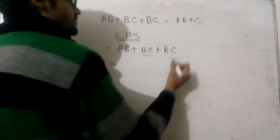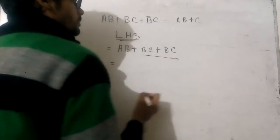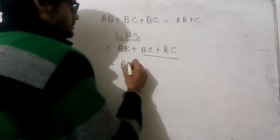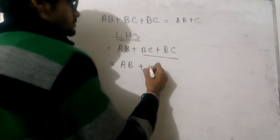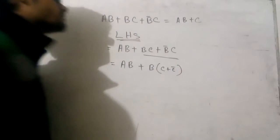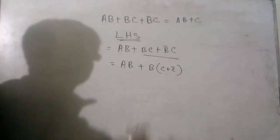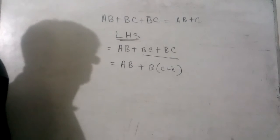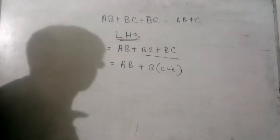Now, we can see from here, we can apply our distributive property. We can write it from our distributive law: AB plus B into C plus C dash.